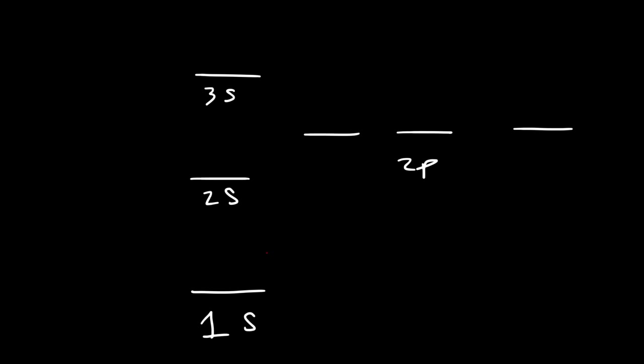So the first electron has to go in the 1s sub-level. Now, where is the second electron going to go? Is it going to go in this orbital or in this orbital? Well, based on Aufbau principle, we need to fill the lower energy levels first. So we've got to put the second electron here, and then the third is going to go here.